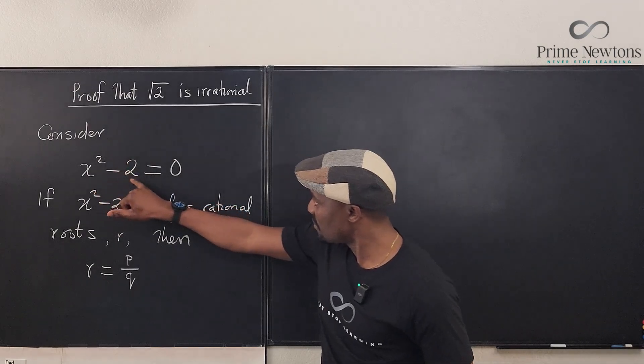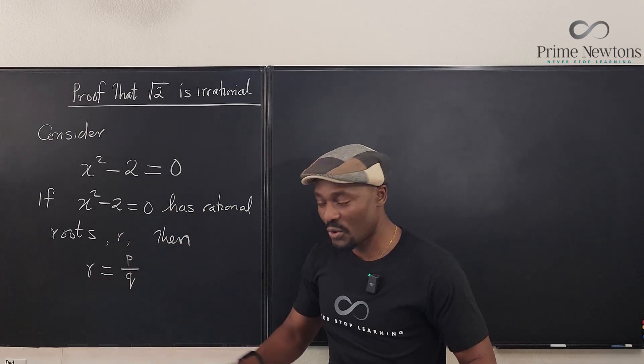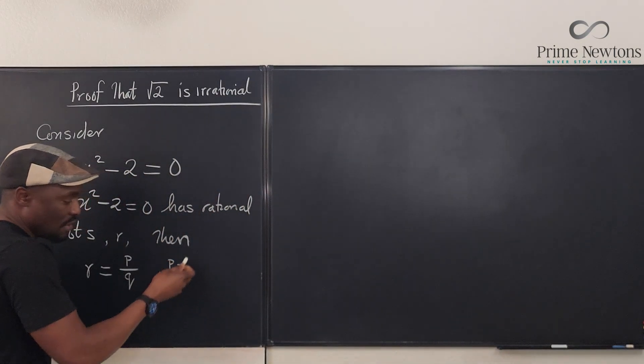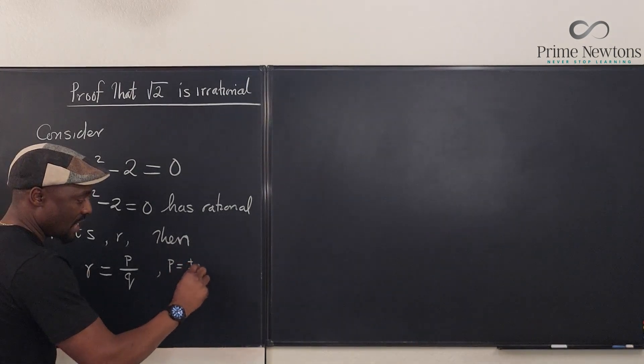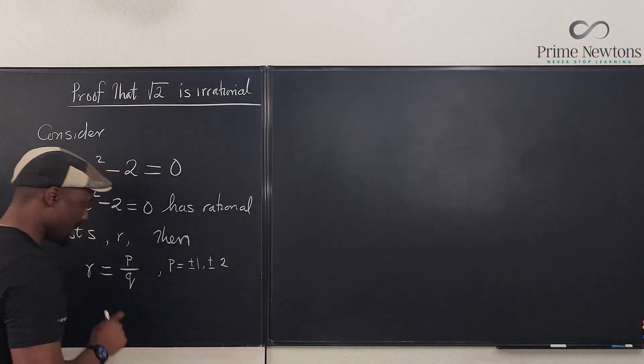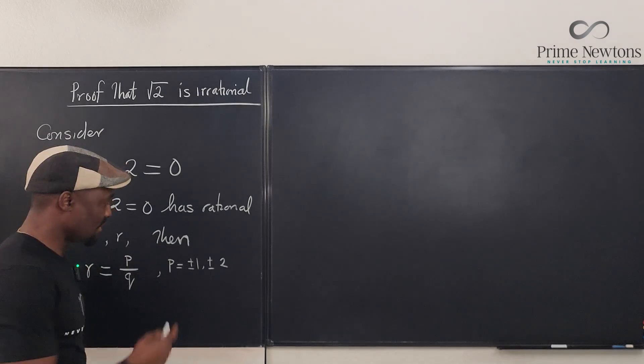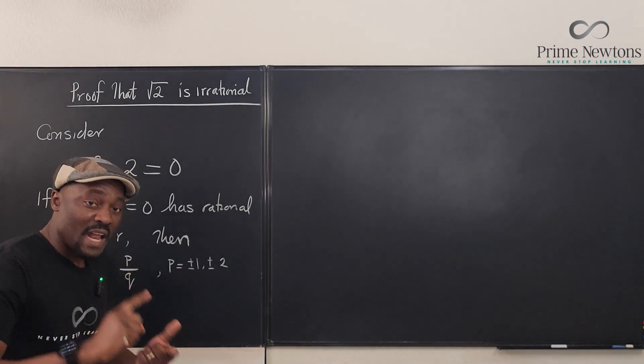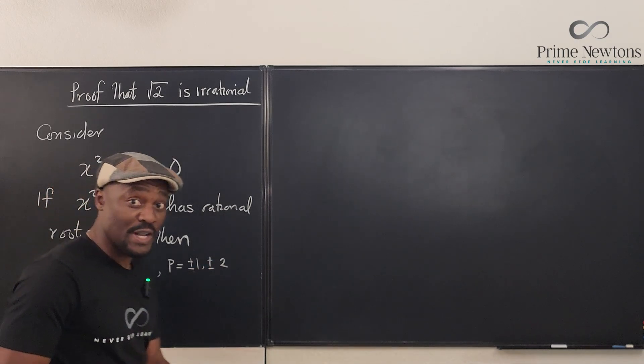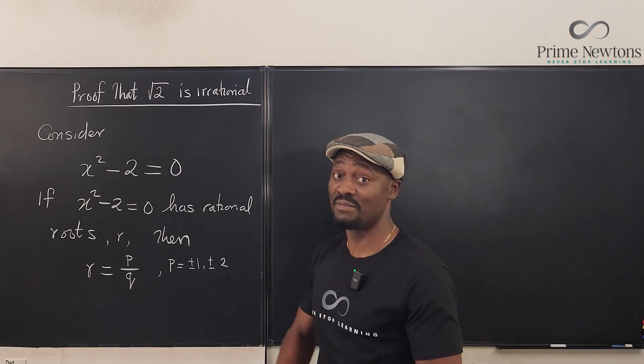So in this case, the factors of 2 are p. The candidates for p are p must be equal to one of these, either plus or minus 1, which are the factors of 2, or plus or minus 2. And the factors of q, this is just 1, so 1 doesn't have any factors. So the values of p must be plus 1, minus 1, plus 2, or minus 2, according to the rational root theorem.